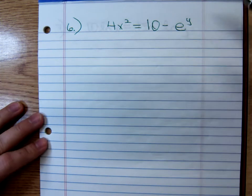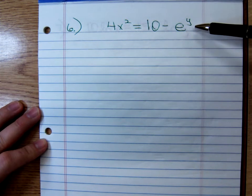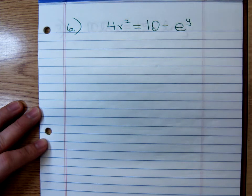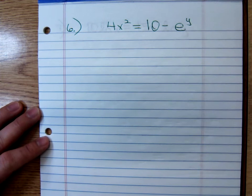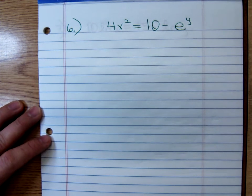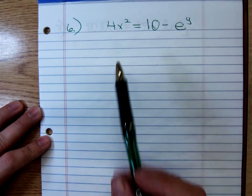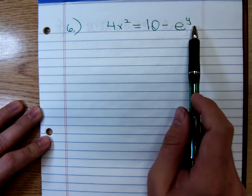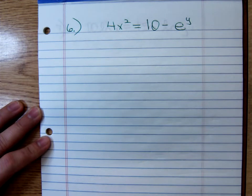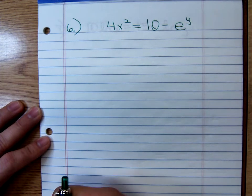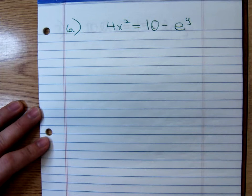Here we're told we're given the function 4x squared equals 10x minus e to the y. We're told to find dy dx using implicit differentiation. Well, I'd want to use implicit differentiation. I know that because the equation's not solved for y. That's when you use implicit differentiation. If it's not in the form y equals or f of x equals, use implicit differentiation.